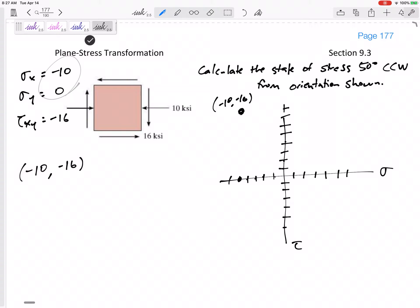My center would be the average of those, negative 5. The radius would be the distance between those two points. This is at negative 5, 0. Looking at this triangle with base of 5 and height 16: 5 squared plus 16 squared, take the square root. That would be 16.76, the radius.